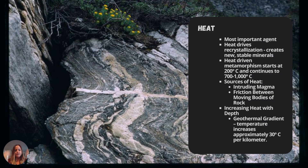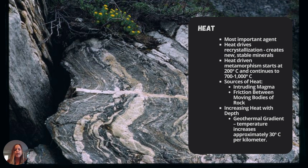As you go deeper into the earth, we have something called the geothermal gradient, which is the temperature increase per kilometer — about 30 degrees Celsius in a given area. However, the geothermal gradient will shift depending on whether you're next to a magma source, a divergent plate boundary, or a subduction zone.